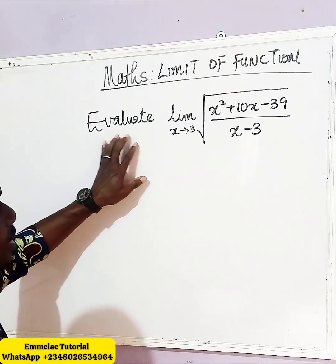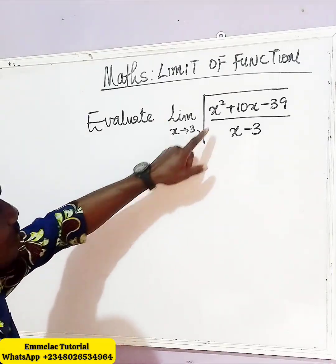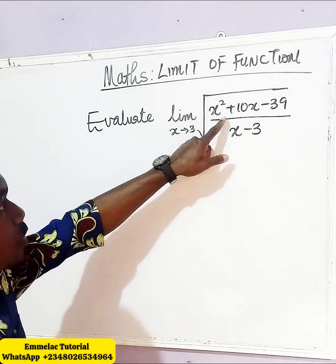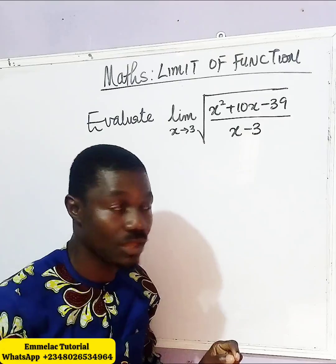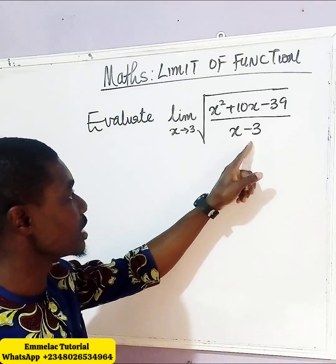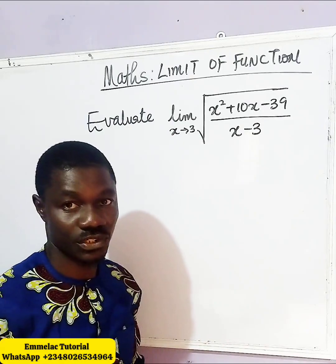We are going to evaluate the limit as x tends to 3 of the square root of x squared plus 10x minus 39 all over x minus 3.